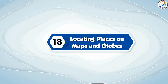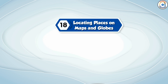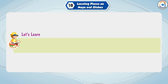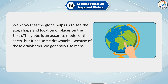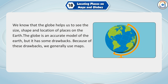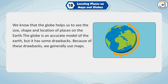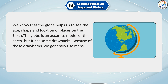Chapter 18: Locating Places on Maps and Globes. We know that the globe helps us to see the size, shape and location of places on the earth. The globe is an accurate model of the earth, but it has some drawbacks.